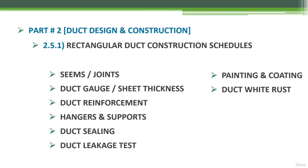In this part we're going to discuss in full detail the duct construction process and procedure, focusing on the following points: duct seams and joints used to assemble the duct sheet metal, duct gauge and sheet metal thickness, duct reinforcement and when it is required, duct hangers and supports, duct sealing and duct leakage test, painting and coating of the duct, and duct white rust.